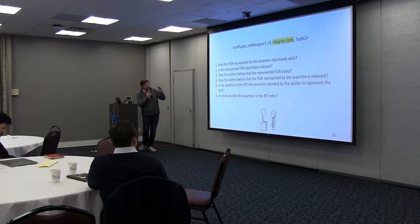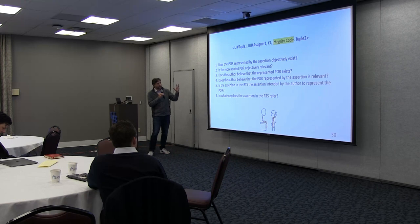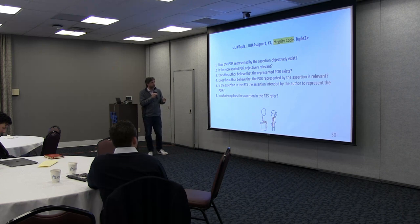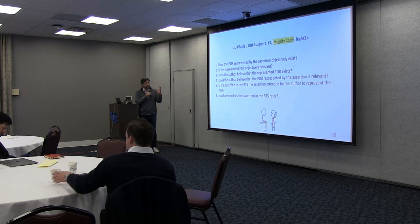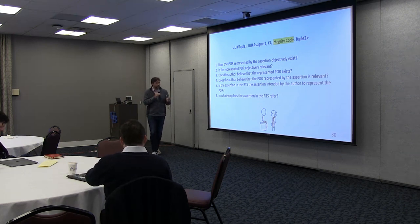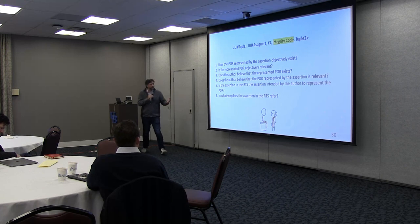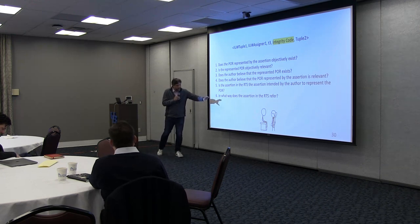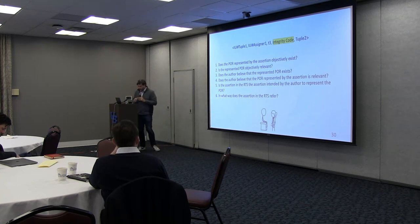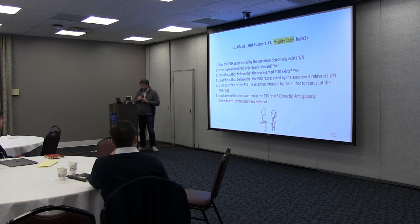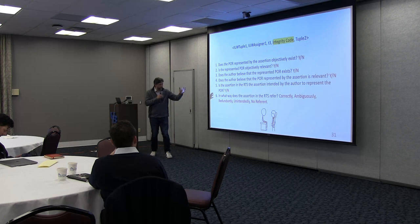When we generate the integrity code, we ask these questions in order: Does the portion of reality represented by the assertion objectively exist? Is the represented portion of reality objectively relevant? Does the author believe the represented portion of reality exists? Does the author believe the portion of reality represented is relevant? Is the assertion in the record tracking system the assertion intended by the author — if not, it's probably a typo. And finally, in what way does the assertion in the record tracking system refer? This talks about empty reference and so on. You ask these questions in order to get the integrity codes.